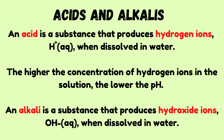The next subtopic is acids and alkalies. An acid is a substance that produces hydrogen ions when dissolved in water. The higher the concentration of hydrogen ions in the solution, the lower the pH. An alkali is a substance that produces hydroxide ions (OH⁻) when dissolved in water.